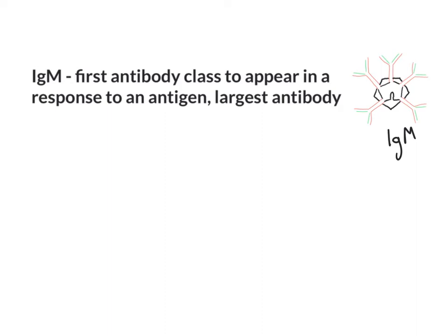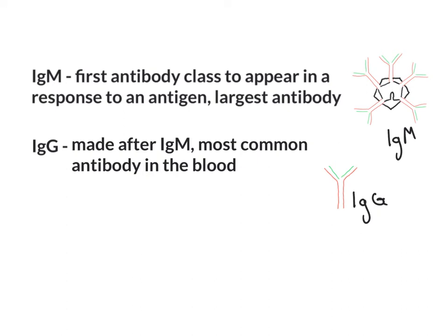Eventually there is a class switch and they will convert to making IgG. IgM gets pumped out about 10 days into the infection, and then eventually there will be a class switch to IgG, which takes a few weeks. So in order to test for antibodies, we're talking at least a month out from infection, maybe even two. This also depends on the specific virus, because some will cause the immune system to make antibodies earlier and some will take a little bit longer.